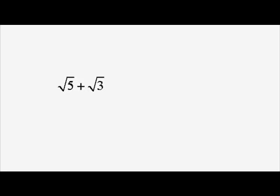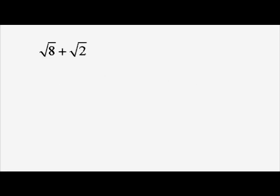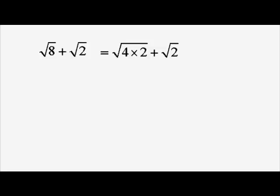In general, when you're adding two surds, you can't always simplify them. However, sometimes there is something you can do, and it starts with simplifying the individual parts. Root 2 can't be simplified, but root 8 can. Root 8 is root 4 times 2, which becomes 2 root 2 when we take the 4 outside. So 2 root 2 plus 1 root 2 is 3 root 2. Root 2 plus root 8 can be simplified to 3 root 2.